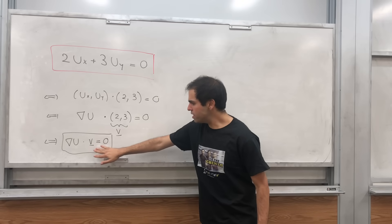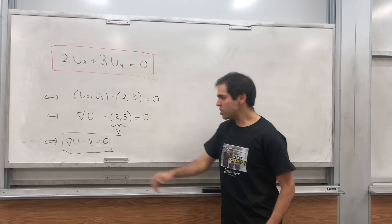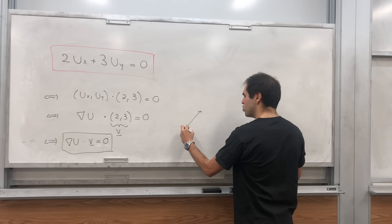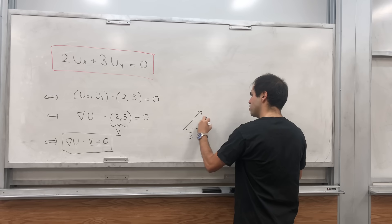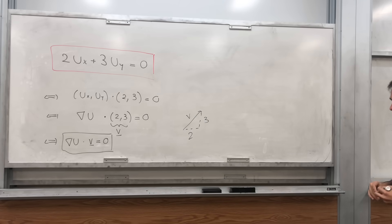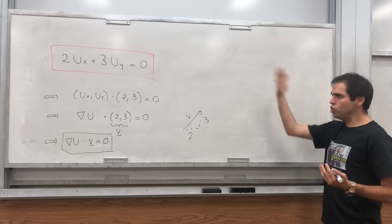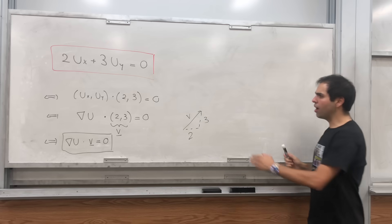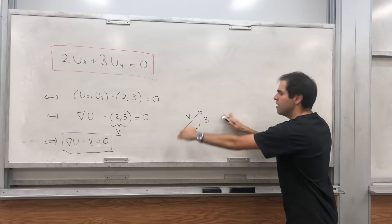So in other words, what this is saying is the directional derivative of u along the vector (2, 3) has to be 0. So what this is saying is, in fact, u, our solution, must be constant on lines parallel to v.